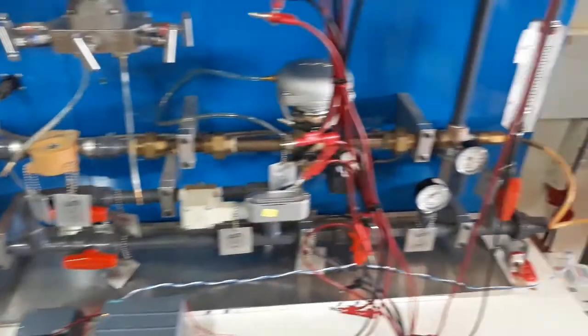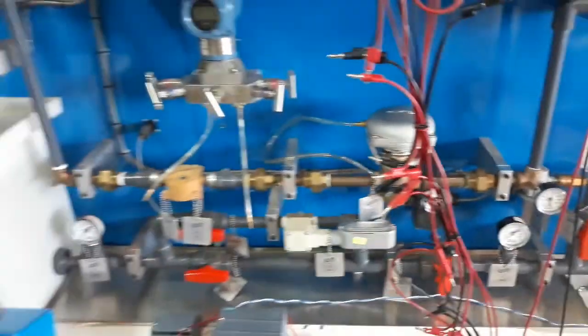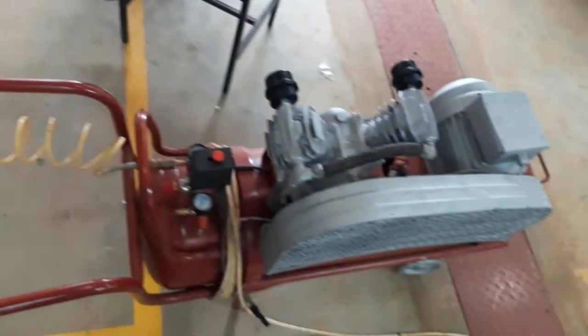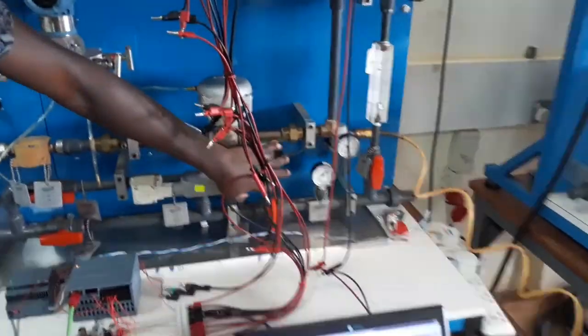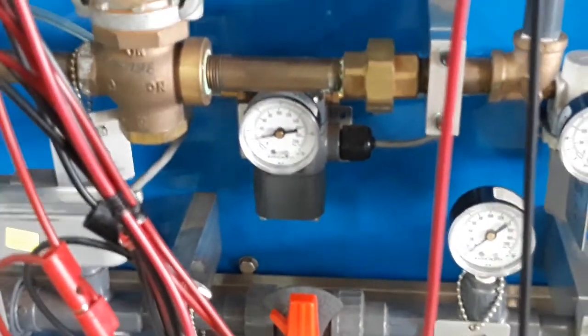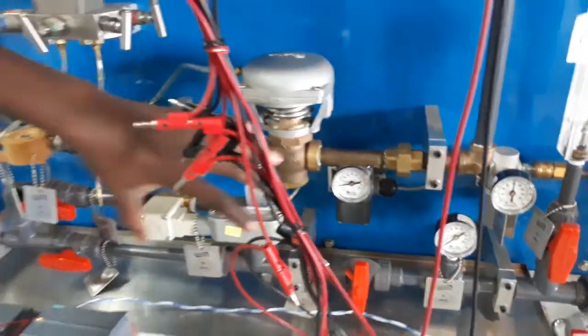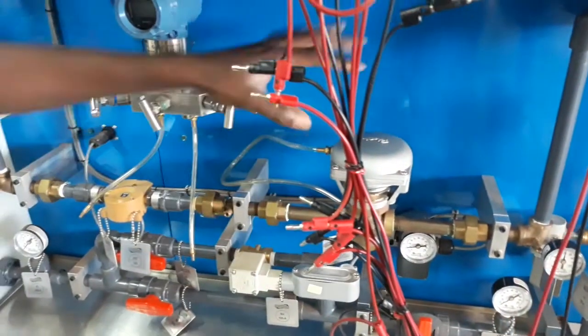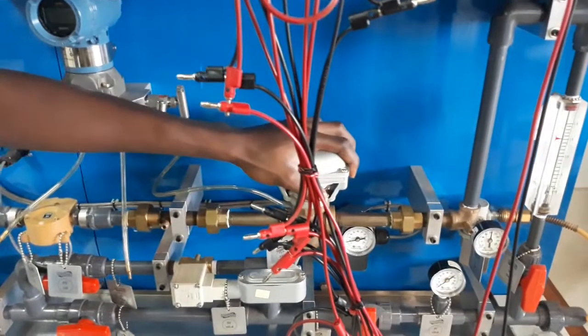For the pneumatic system, it implements a compressor to provide pneumatic control to the diaphragm valve which is controlled by the PID. When it gets a signal from the PID, a current signal, it converts the current signal into a pneumatic pressure signal that is used to control the diaphragm valve.